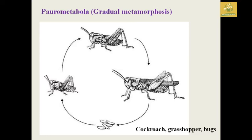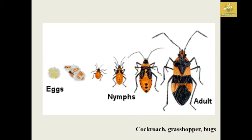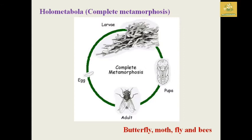Paurometabola is also known as gradual metamorphosis. The young one has some resemblance to the adult but with small differences. They go through egg and nymph stages to form the adult, with some changes in size and wings. There are slight changes in order as well as the name through the instars.